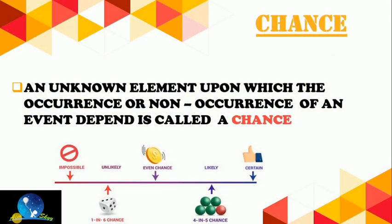Chance is a word very familiar to us. We use it when we say things like 'there are 20 percent chances of getting this' or '99 percent chances of getting marks in an exam.' An unknown element upon which the occurrence or non-occurrence of an event depends is called chance. Every event depends on chances — like a coin, where the occurrence of head depends on chance.